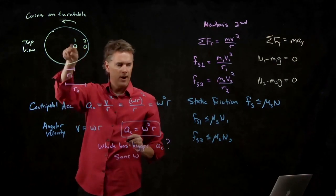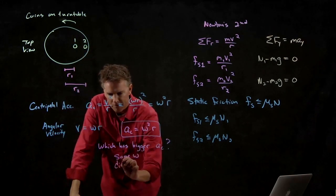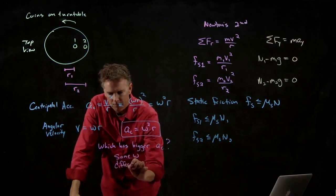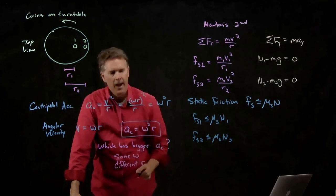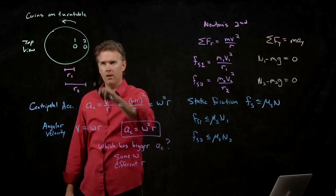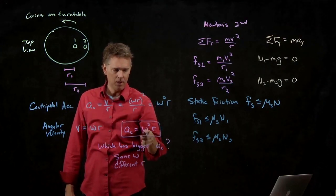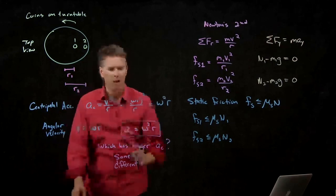All the particles on there have the exact same omega. But of course, we have different r. And since r2 is bigger than r1, coin number 2 has the bigger centripetal acceleration. And so coin 2 flies off first.